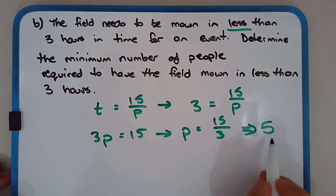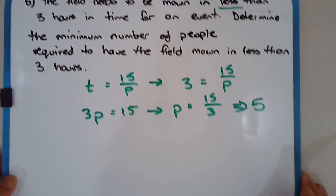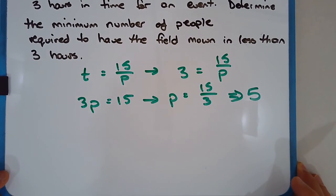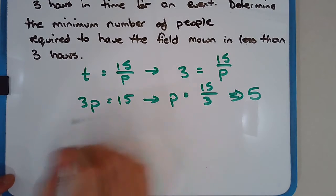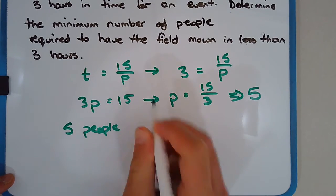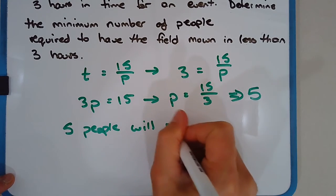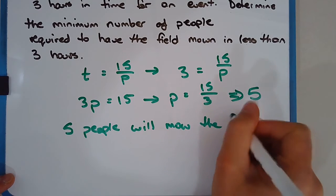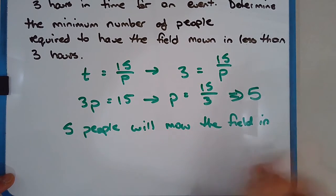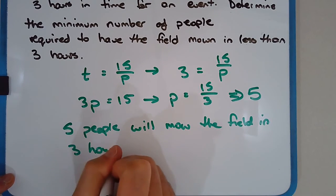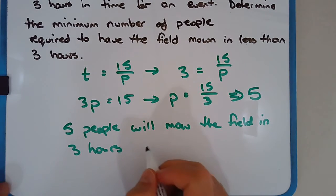So in actual fact, we need one more person to get the time in mowing this field to be less than three, not equal to three. There's a subtle difference there, but it's significant enough that we need to take note of that. So five people will mow the field in three hours. Hence, we need six people.